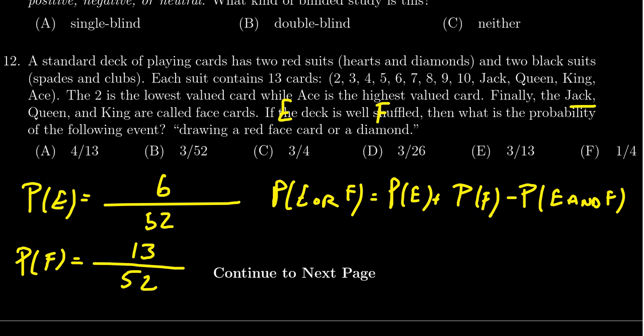We have most of these numbers already. We have 6 over 52, we have 13 over 52. And then over here this last one, what's the probability that we draw an and statement? So we're looking for a red face card and a diamond. Well, the only face cards that are red and a diamond is going to be the jack of diamonds, the queen of diamonds, and the king of diamonds. So we're going to have 3 out of 52.